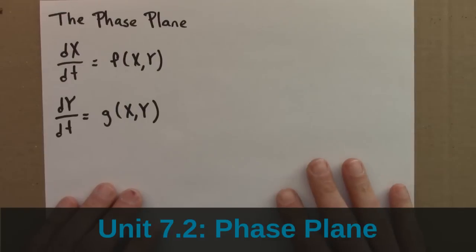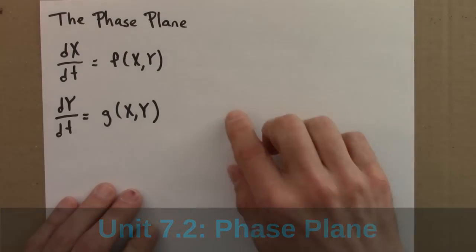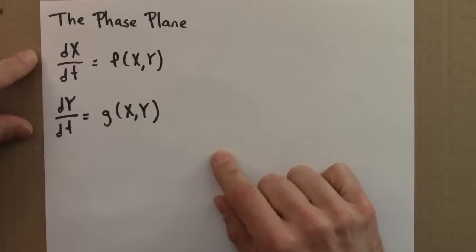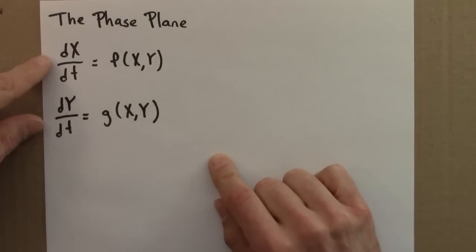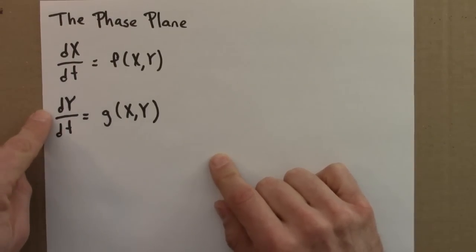So a reminder of what we're working on here. We're looking at differential equations of this form. We have two variables, I'll call them x and y now instead of r and f for rabbits and foxes. So any old variables. And this is a dynamical system.